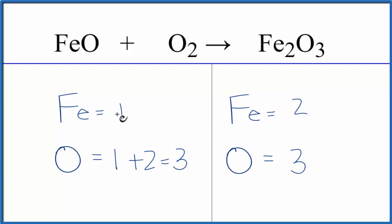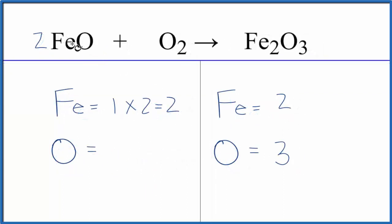It looks like we should start out by balancing the iron since the oxygens are the same. We'll put a two here in front of the FeO, so one times two gives us two and now the iron atoms are balanced. We do need to update the oxygens though, so now we have one times two, two oxygens, plus these two oxygens here, we have four oxygen atoms.